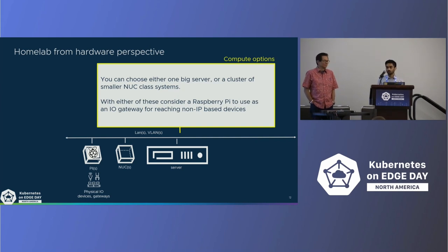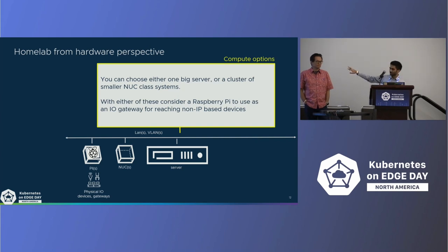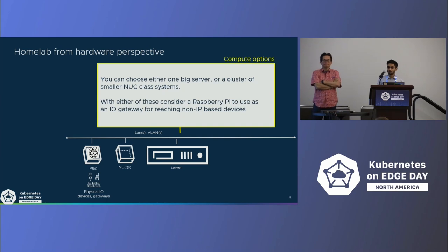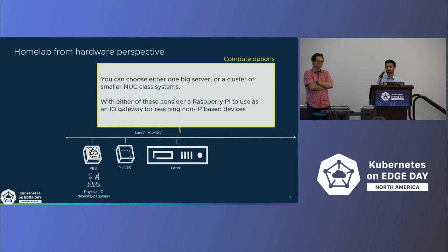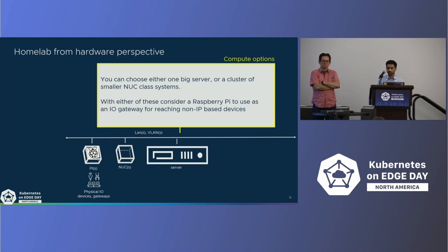Two options not listed on the slide are old laptops and old desktops. NUCs, servers, and all these different compute options are just computers at the end of the day. Many of us probably have old laptops or desktops collecting dust. You can put Linux on them, connect them to a network, and use them to run workloads — a small home lab installation that way.